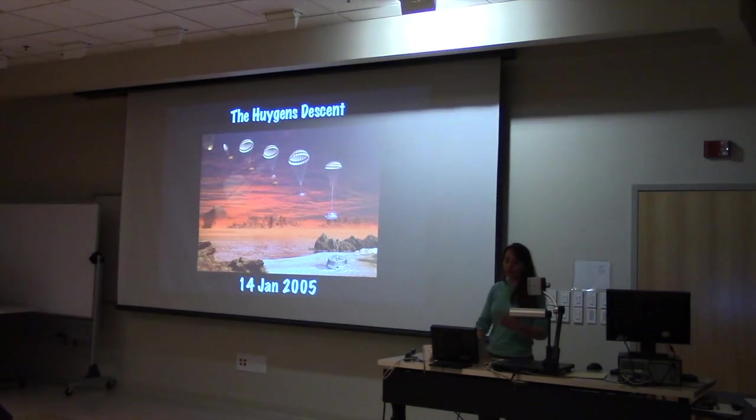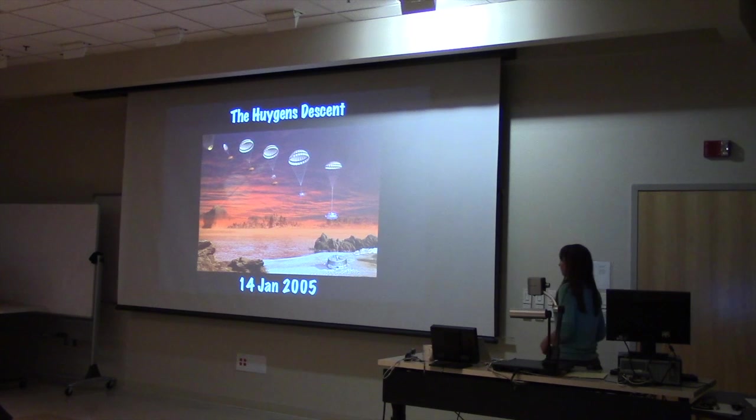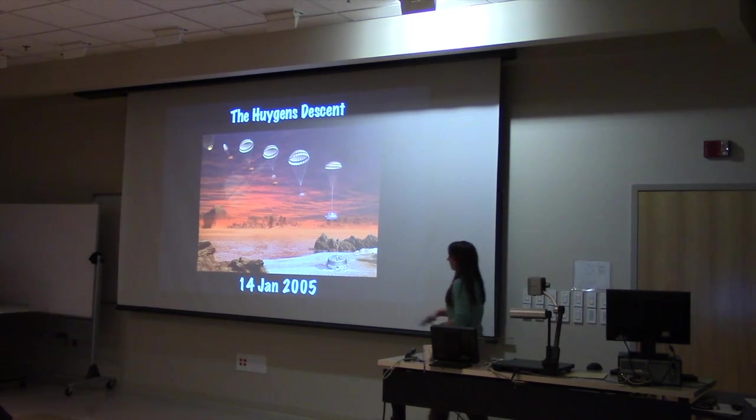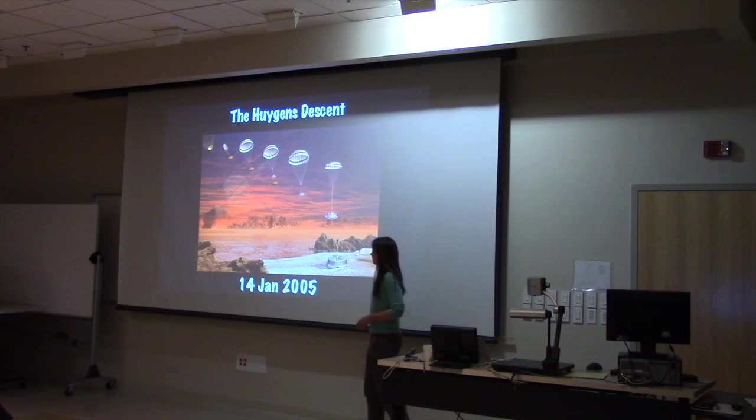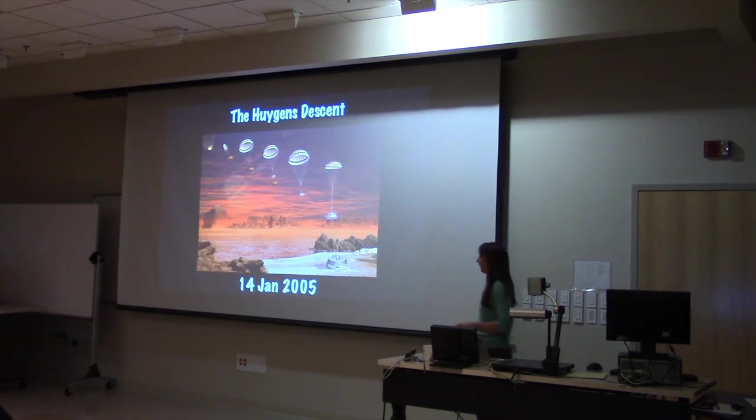So right away, as soon as Cassini got there, it released the Huygens probe. So it released it in late 2004. It had a pretty long cruise down, and it landed on the surface in January of 2005.